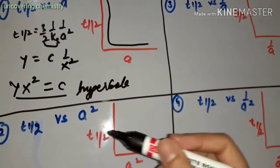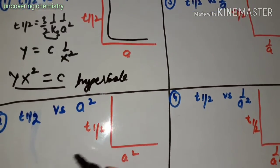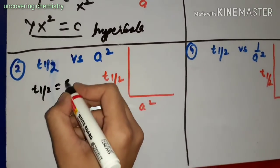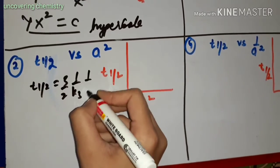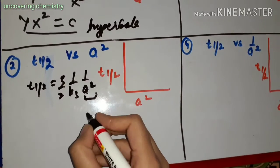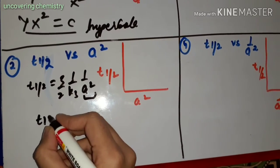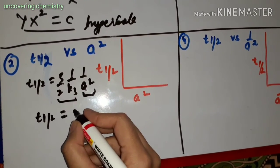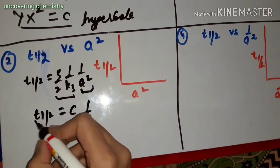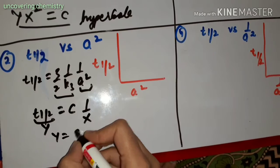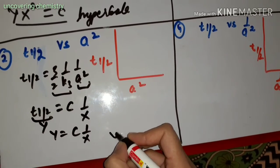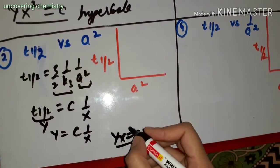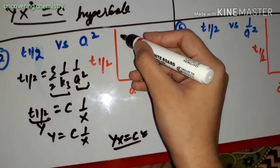The next graph is T-half versus A squared. From the equation T-half equals (3/2) times (1 upon K3) times (1 upon A squared), if we consider A squared as X, then T-half equals C times 1 upon X, giving Y times X equals C — a hyperbola with odd powers. This means it is less sharply decreasing compared to the previous graph.